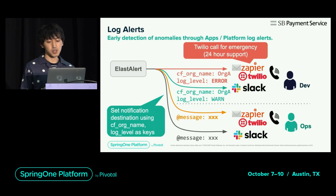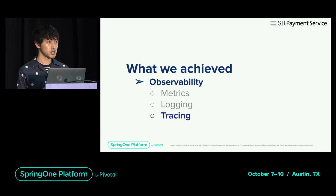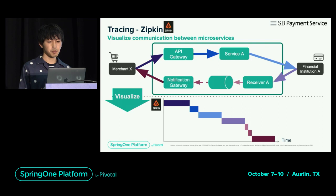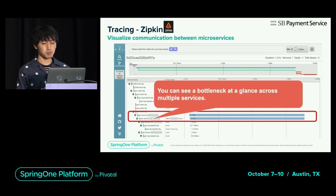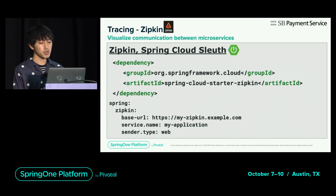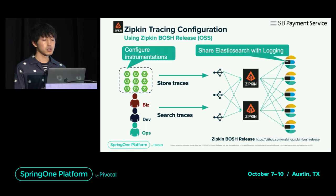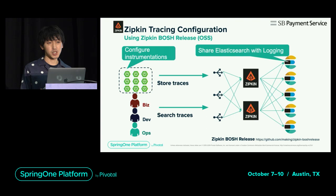Finally, tracing. As for tracing with Zipkin, it is possible to visualize the communication between microservices. The actual screen shows at a glance which process took time across multiple services. By using Spring Cloud Sleuth, the application sends a trace with just one setting. Zipkin is also built using the community BOSH release. The trace is stored in Zipkin by setting the application to output traces. To store the trace, Elasticsearch for logging is shared. The stored trace is then searched by Biz, Dev, and Ops members.